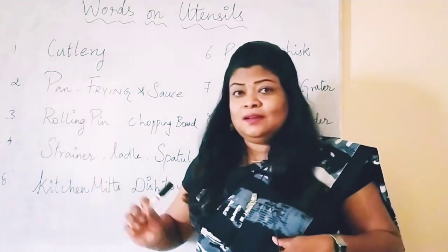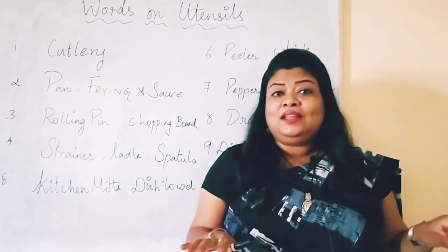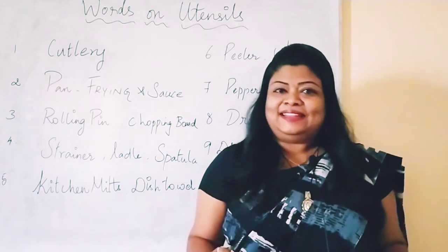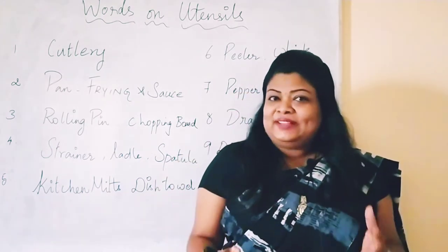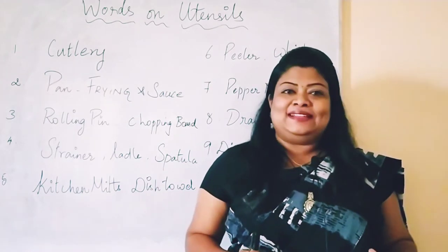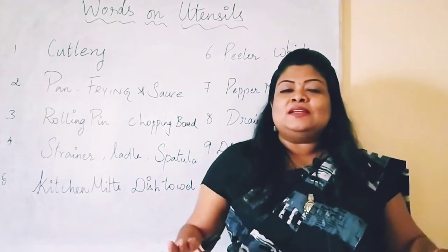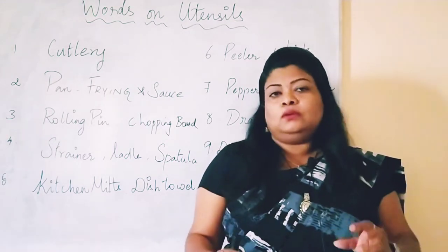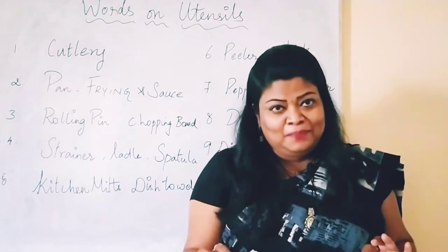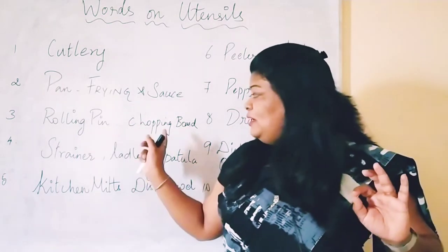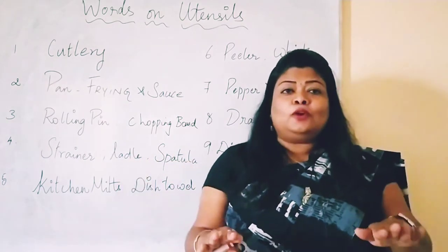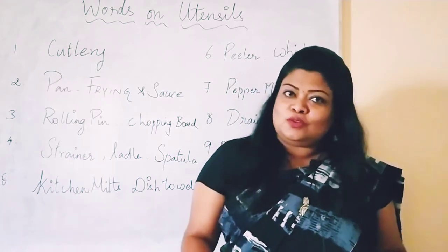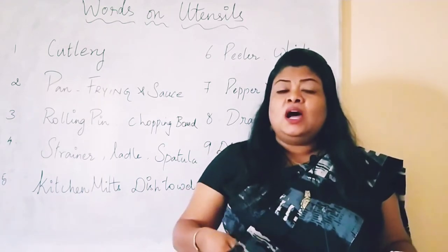The third word is a very new word for you, I think — rolling pin. What is a rolling pin? We use it for chapati, puri, and similar flatbreads. Rolling pin is nothing but the chapati roller. People call it just 'roller', but it is a rolling pin — it has got a name. Along with it, another word: chopping board. You can also call it a cutting board — that's okay. But the correct term is chopping board.